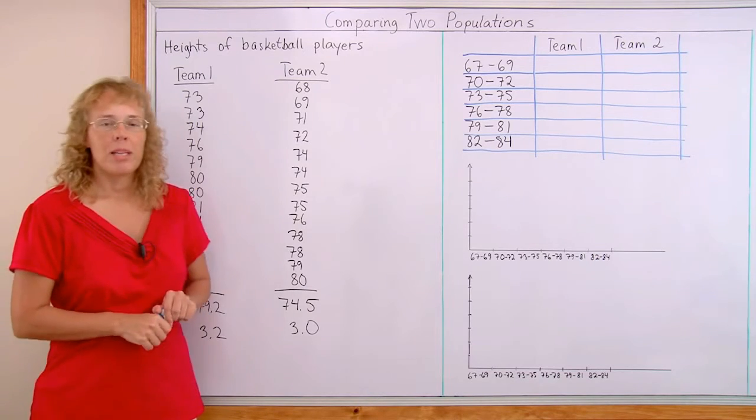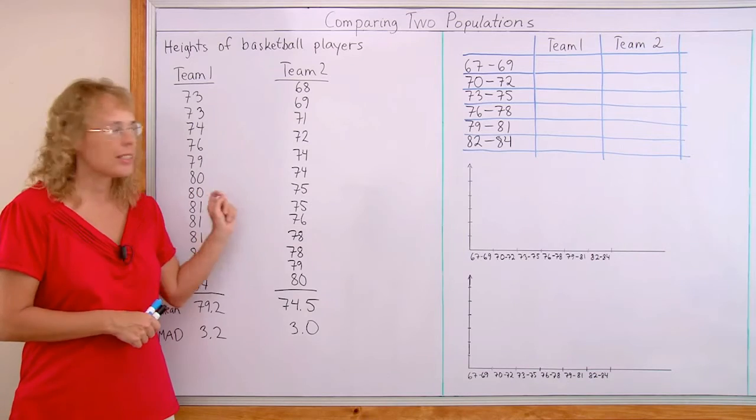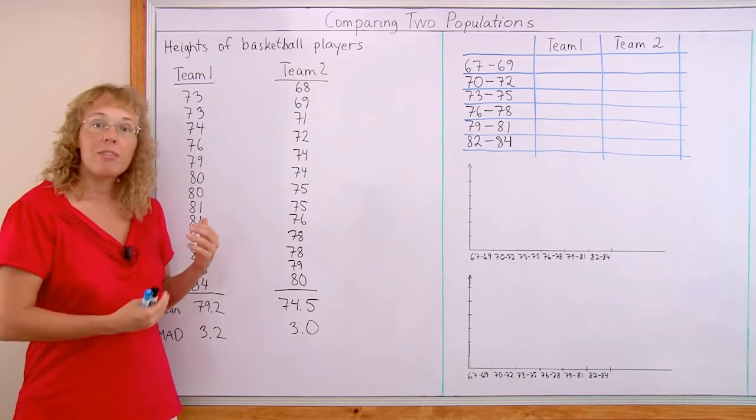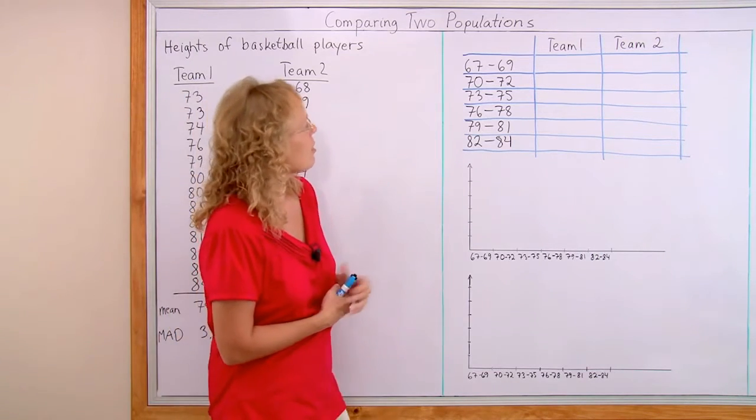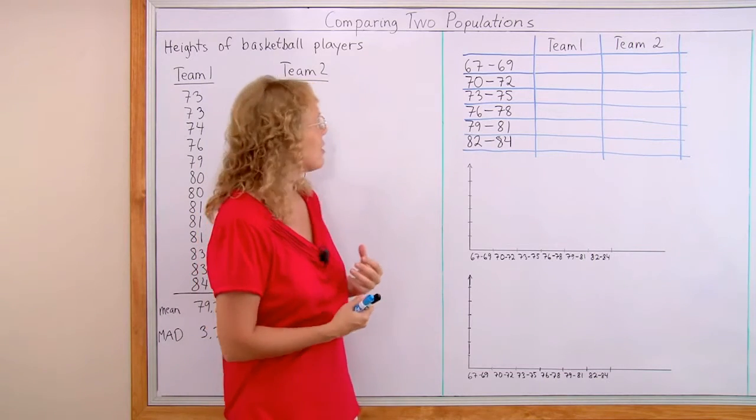And now, we're going to make a histogram for both teams, for both data sets. And then compare them visually also. Here, for the histogram, we need these called bins. We need to categorize the data.